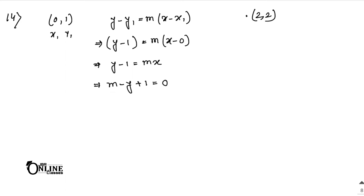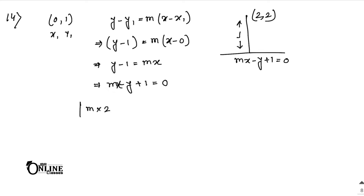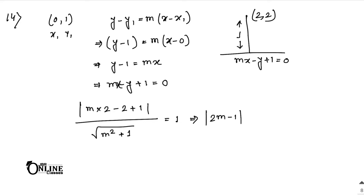So the line equation is mx minus y plus 1 = 0. The point is (2, 2). The perpendicular distance is given as unit length, which is 1. Applying the formula: |m(2) minus 2 plus 1| divided by root over (m squared plus 1) equals 1, which gives |2m minus 1| = root over (m squared plus 1).